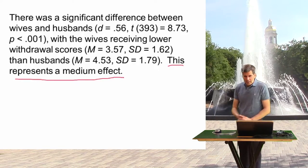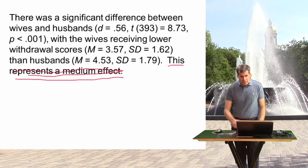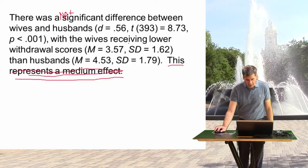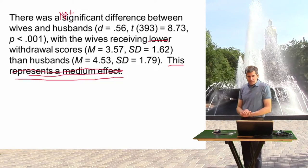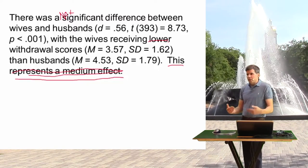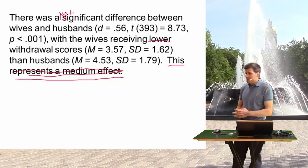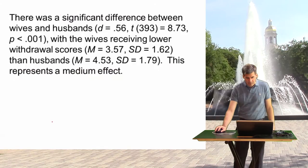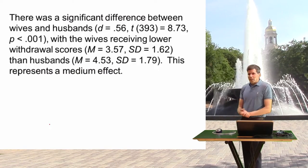If results were non-significant, you would not comment on effect size, and you would say wives received similar withdrawal scores to husbands. On tests, non-significant examples are unusual since I prefer to give you examples where you can practice writing up significant results. And that covers all of the examples for Unit 3.